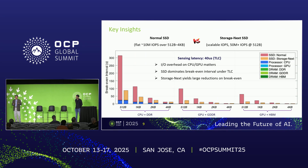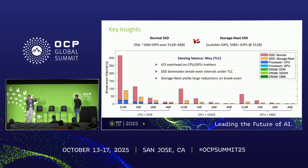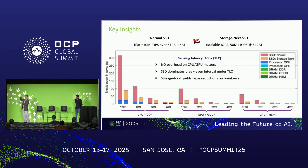We consider three different platforms: CPU plus DDR, GPU plus GDDR, and GPU plus HBM. Each bar shows the contribution of different components to the total break-even interval, assuming TLC flash. The host cost cannot be ignored, especially the host processor, and the SSD still dominates the total break-even interval. But Storage Next combined with GPU can push the break-even to a tenth of a second.